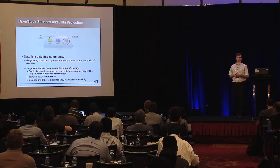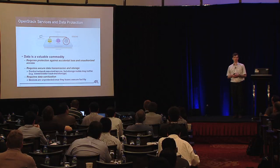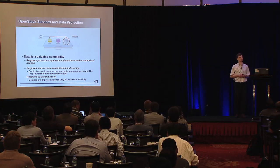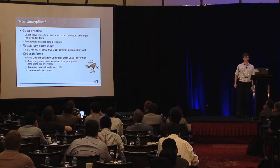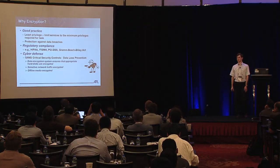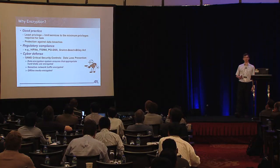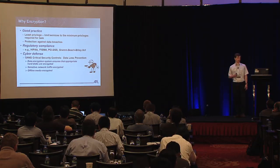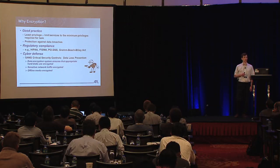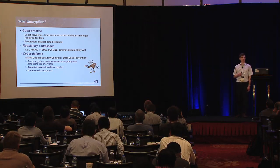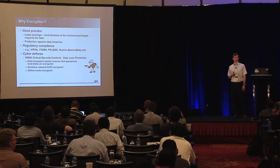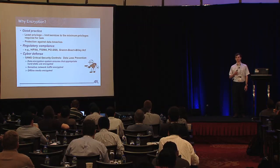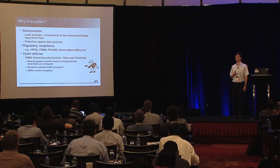Data protection and encryption also protects against instances where data sanitization may not be perfect — such as someone who is disgruntled walking out of the data center with disks in their back pocket. At the Grizzly Summit, Dustin Kirkland pointed out that out of 480 privacy breaches reported to the Department of Health and Human Services from 2009 through 2012, 72% of those would have been trivially protected against by encrypting data at rest.